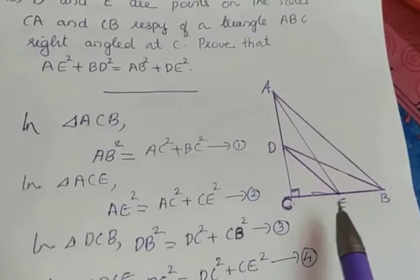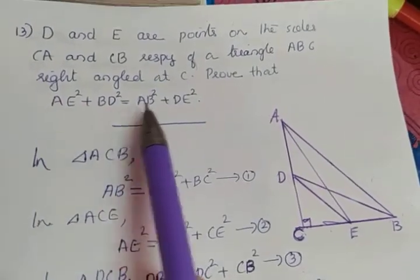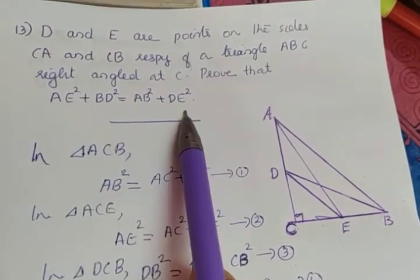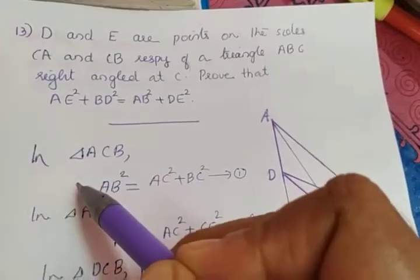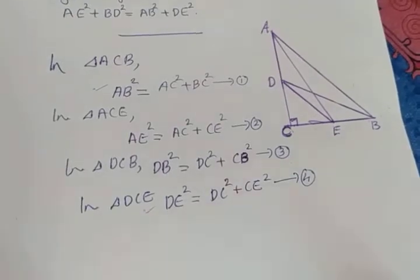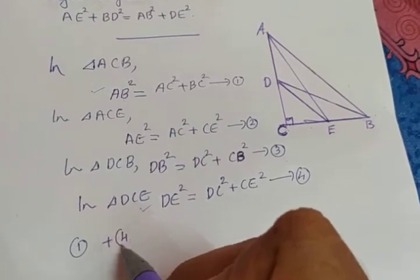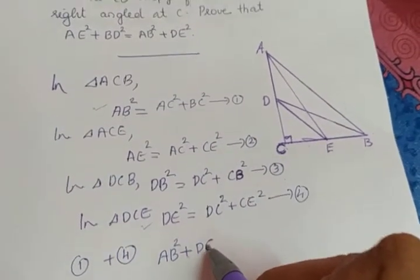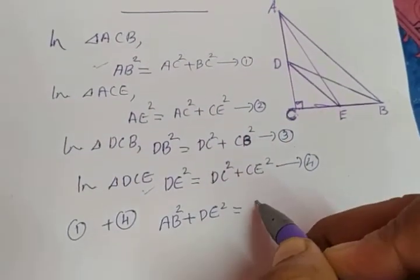These four equations are obtained from the given conditions. We have to prove AE square plus BD square equals AB square plus DE square. Taking the right-hand side: AB square plus DE square. AB square appears in equation 1 and DE square appears in equation 4, so we add equations 1 and 4. The left side gives AB square plus DE square.